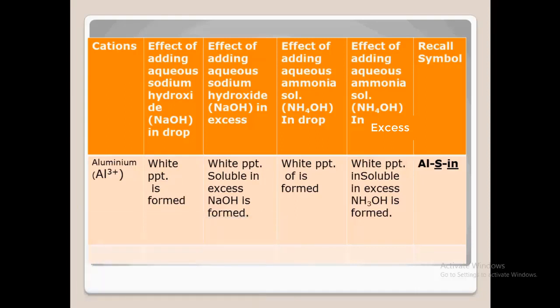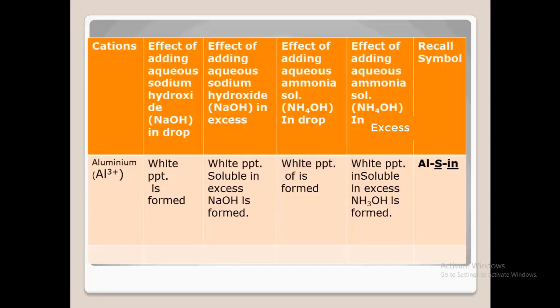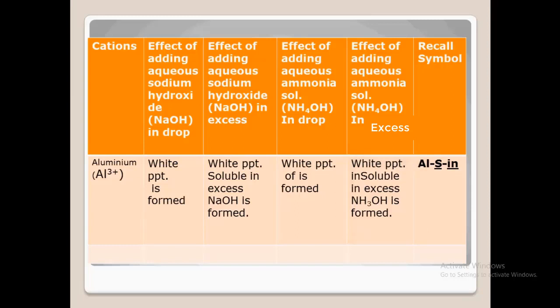Now moving to ammonium hydroxide. Adding aqueous ammonia solution in drop to a solution containing aluminium also forms a white precipitate. When you add it in excess, the white precipitate is insoluble in excess of ammonium hydroxide. So here we have: white precipitate, insoluble in excess ammonia solution.